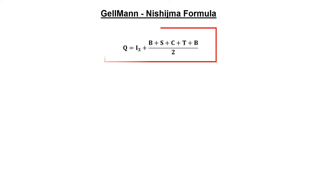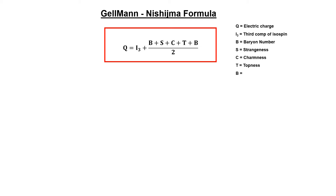A relation between all these quantum numbers of quarks is called the Gell-Mann–Nishijima formula, where q is the electric charge, I₃ is the third component of isospin, B is the baryon number, S is the strangeness, C is the charmness, T is the topness, and the last B is the bottomness. If we define hypercharge by this relation, it will be equal to B + S + C + T + B. Now let's talk about how hadrons can be formed from these quarks.